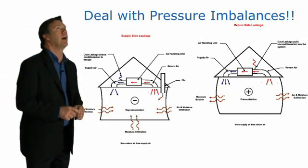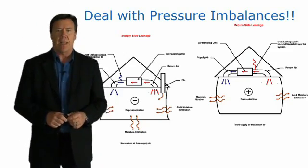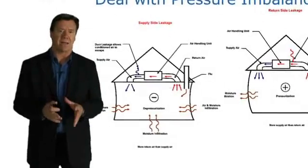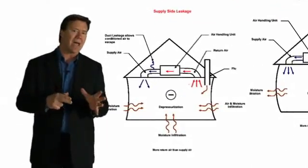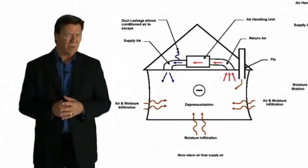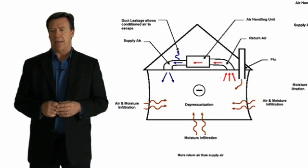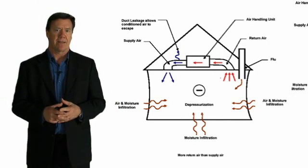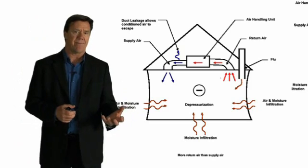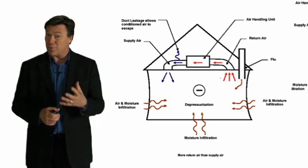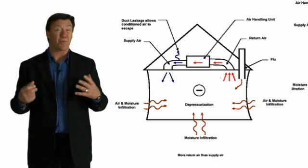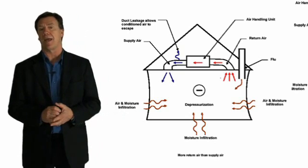We talked earlier about pressure differentials. If you look at the graphic on the left, this is what happens when we have supply duct leaks outside of the building envelope — they cause the structure to be under negative pressure. Let's say we have a 1200 CFM system with 300 CFM of duct leaks leaking into the attic. That means only 900 CFM is coming out of the supply registers, but the return air side is pulling 1200 CFM, so 300 CFM is leaking through all the cracks and gaps in the wall system.